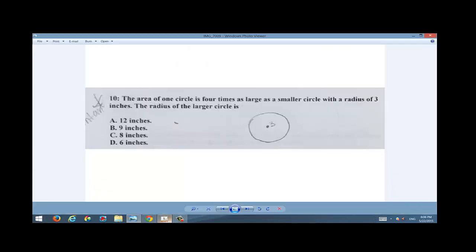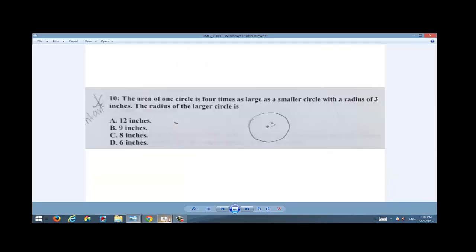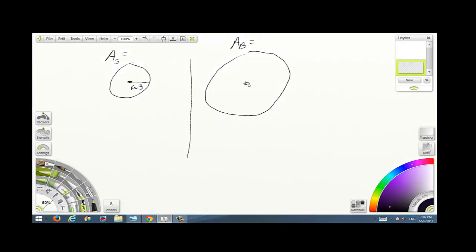I'll just divide it here. They're telling me that the smaller circle has a radius of three inches. I'll just write R=3. They're telling me the radius of the larger circle is... okay, so they're basically asking me for the radius of the large circle. They're asking me for this. This is my goal. I want to find the radius of the larger circle.